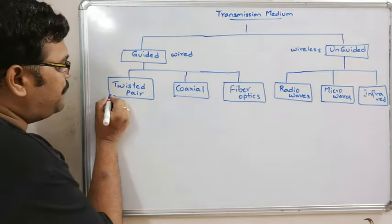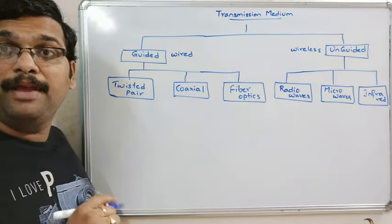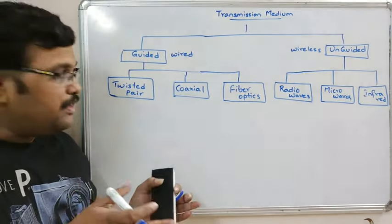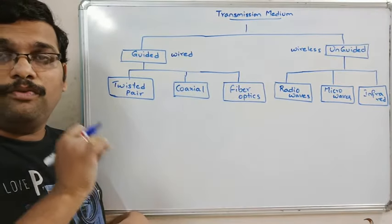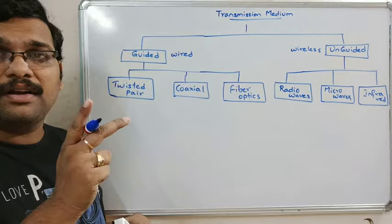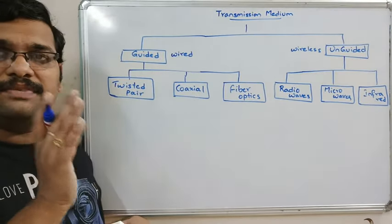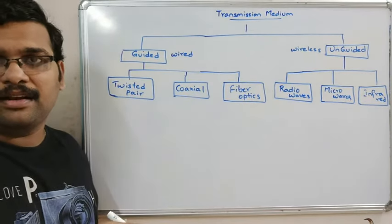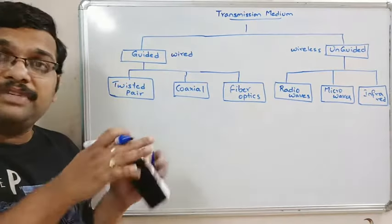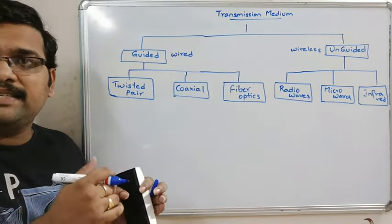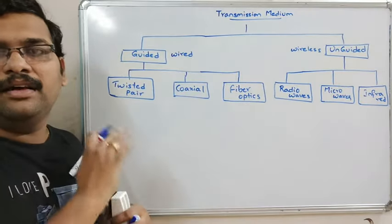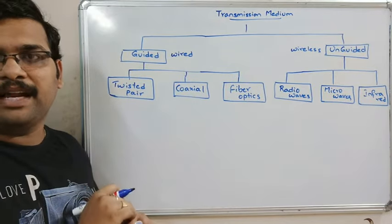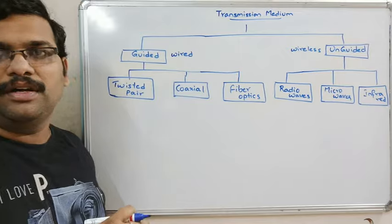Coming to twisted pair — the name itself indicates there are two copper wires, separately insulated and in a twisted format. One wire is for transmitting data and the second wire is for ground. These wires are twisted in order to reduce noise and crosstalk over the data in the cable.